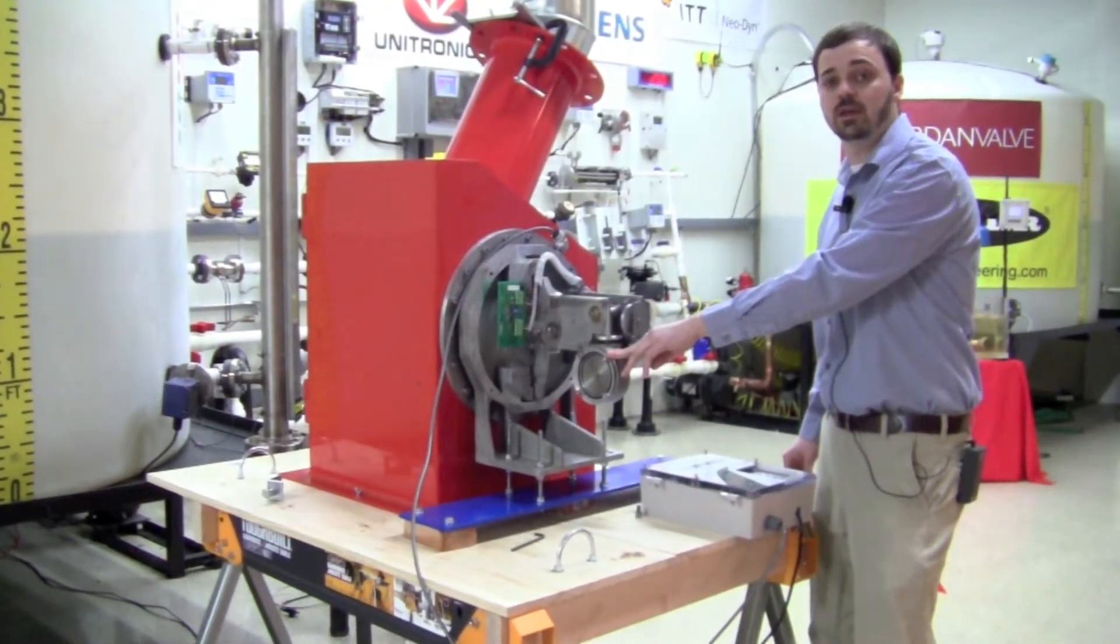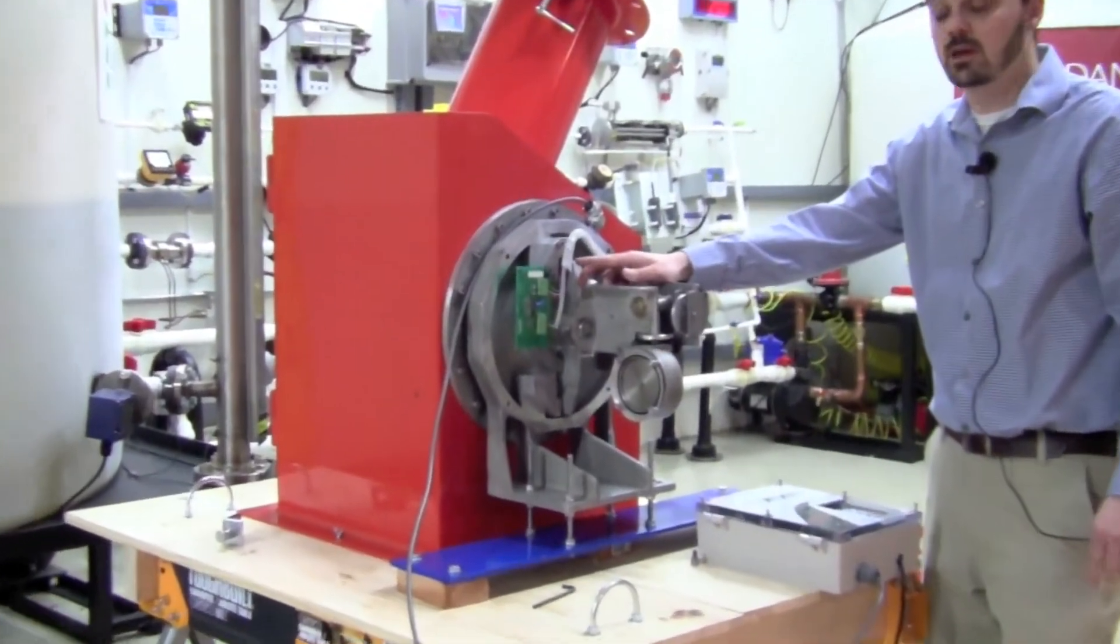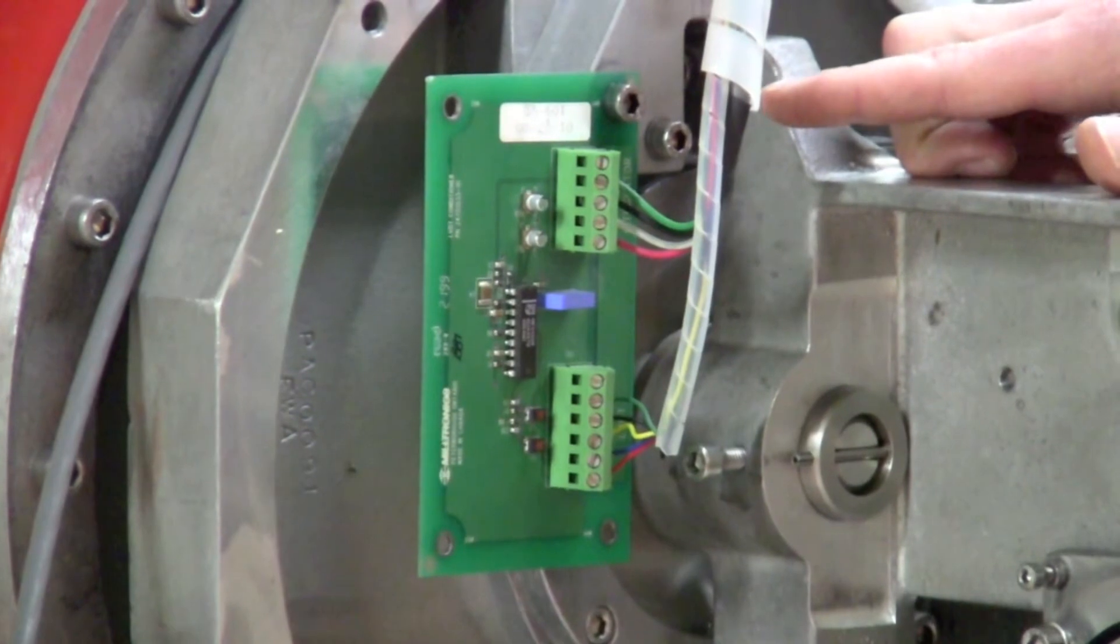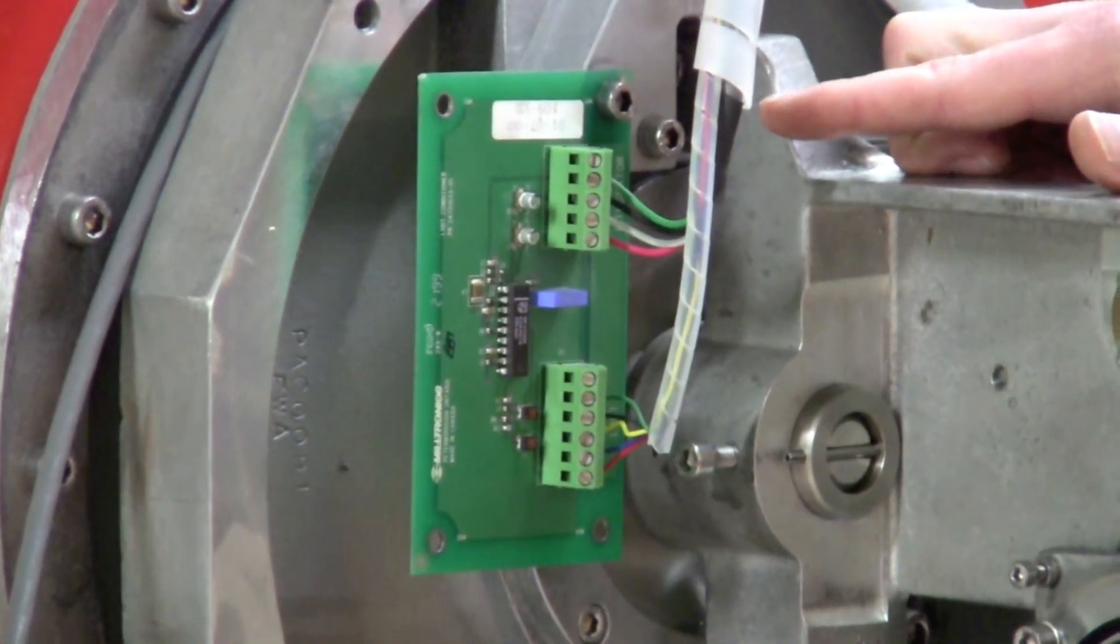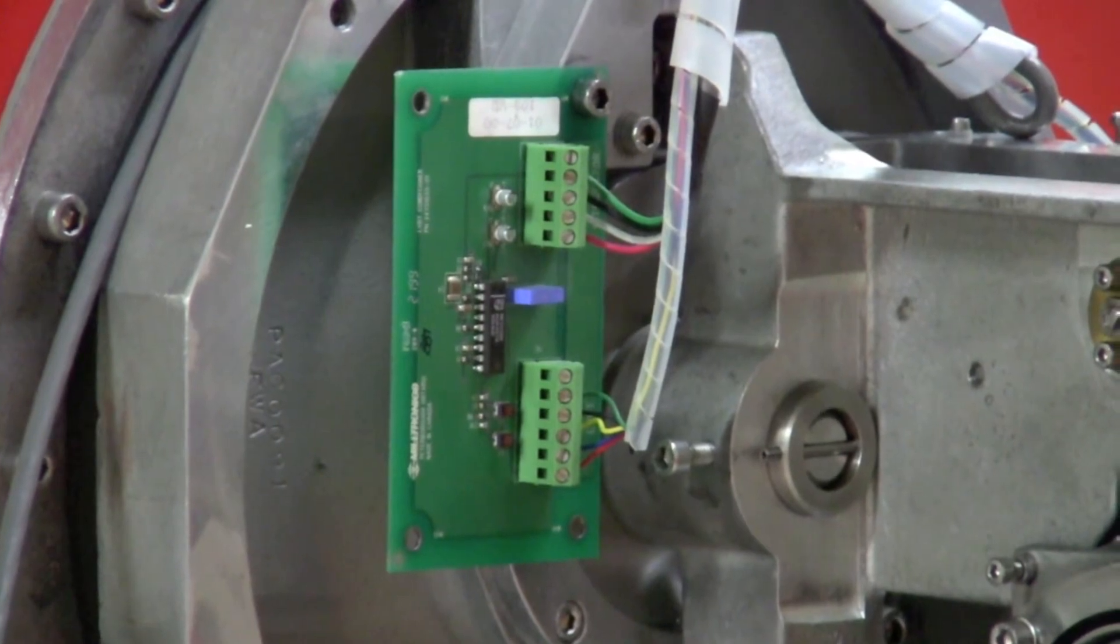Once you've confirmed that your dampening bowl is full of fluid, you will need to make the necessary wire connections. In our case, the signal conditioner card is located on the sensing head itself. In some situations, the conditioner card is located in the integrator.